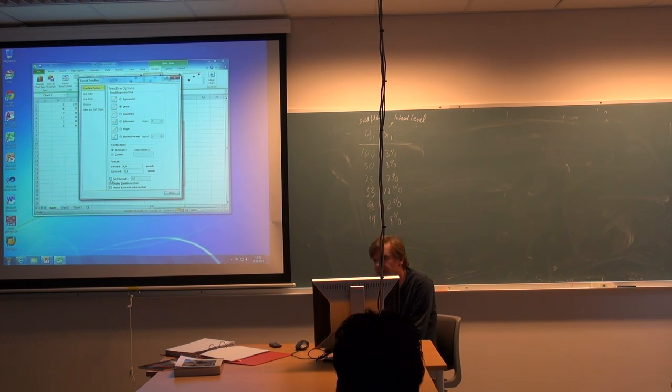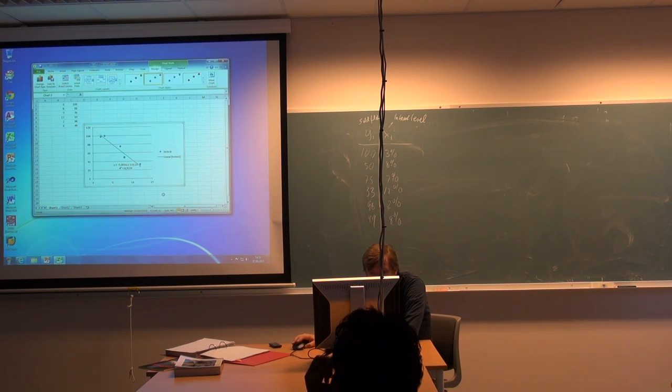Forcing the line, for instance, to go through the origin. In some cases that can be logical. So if there is no activity, there should be no output. In that case, you would like the line to go through the origin. So there's a lot of options here. Let's see. We want to display the equation on the chart. Yes, we would like to do that. Then, of course, we get the values for the a and b. And then I would suggest that we also display r-squared value on the chart. I haven't told you what that is, but we will do that. And then we just hit close here. And then we get the line.